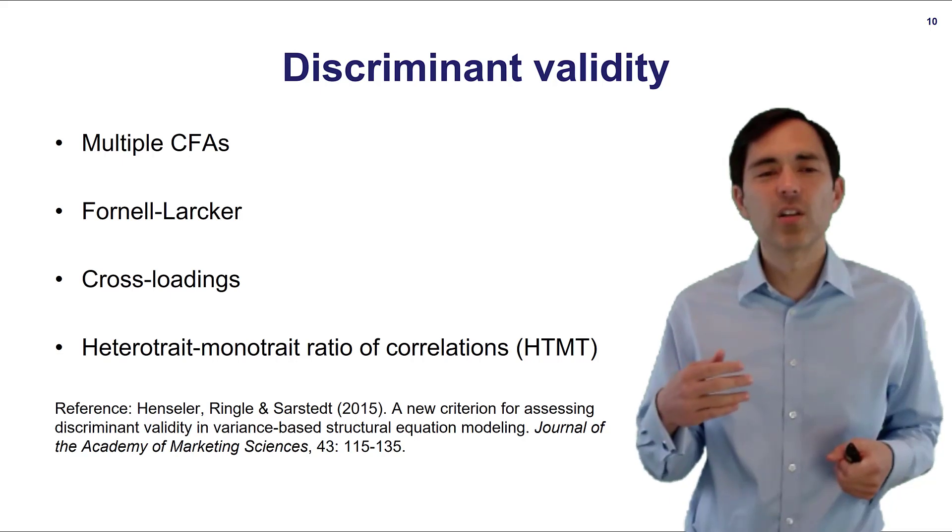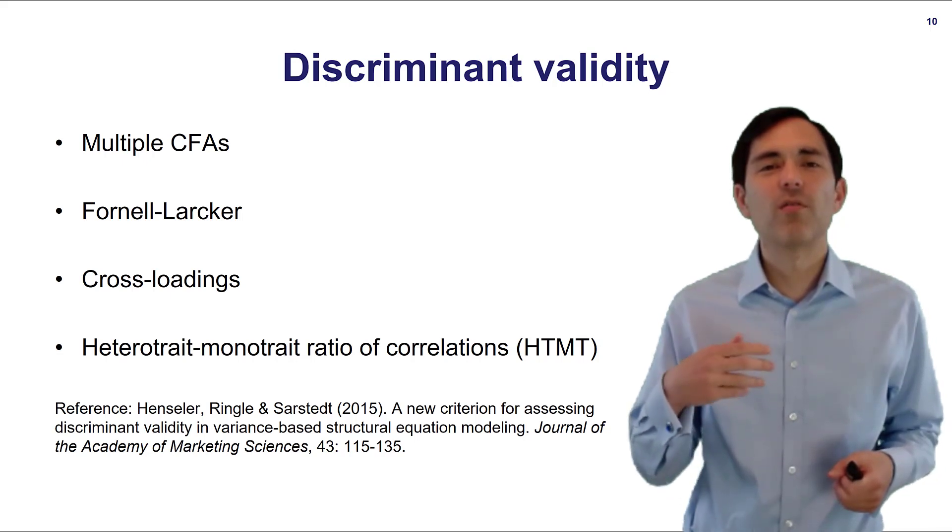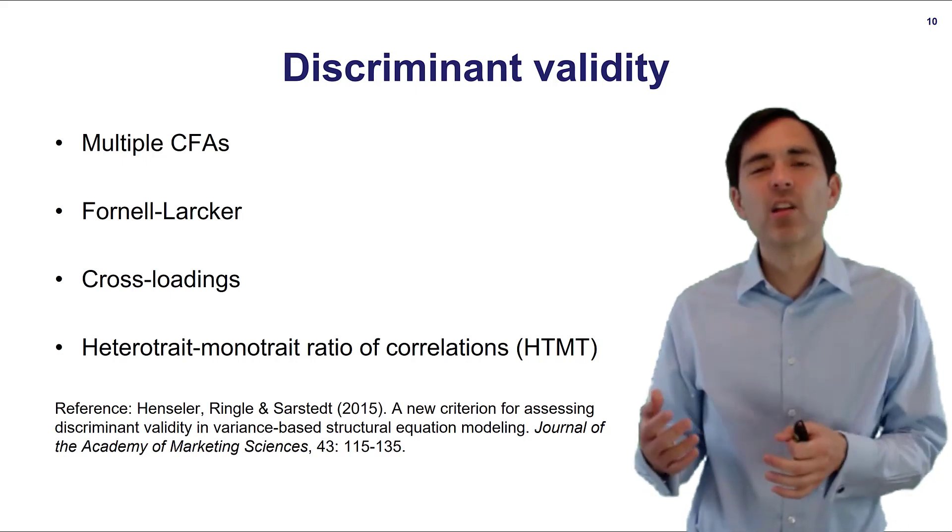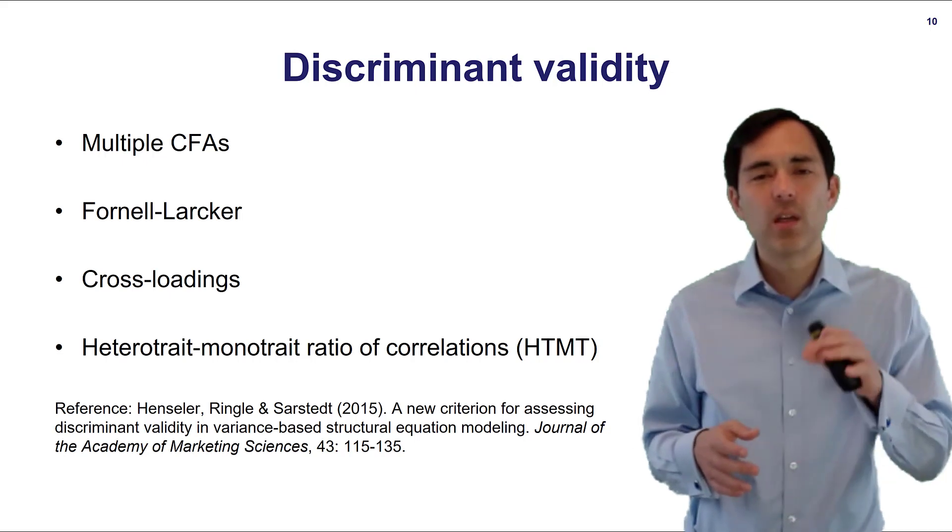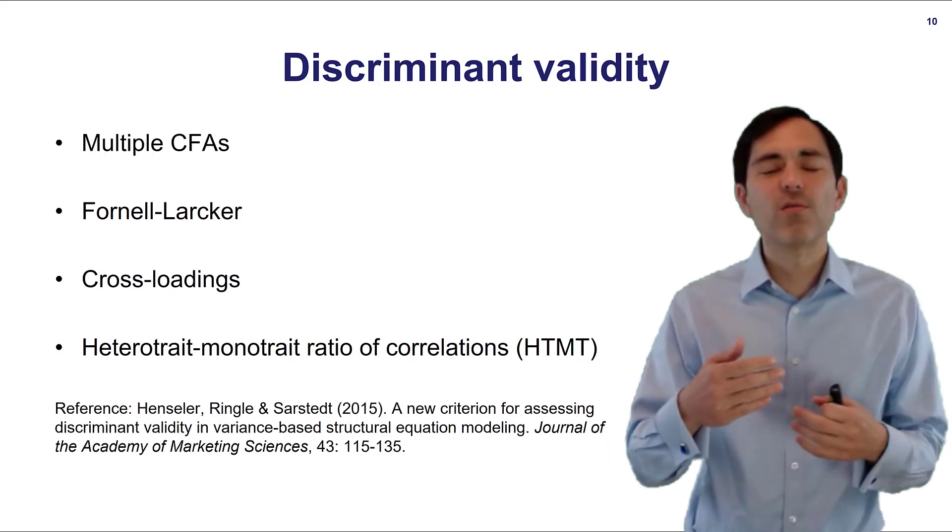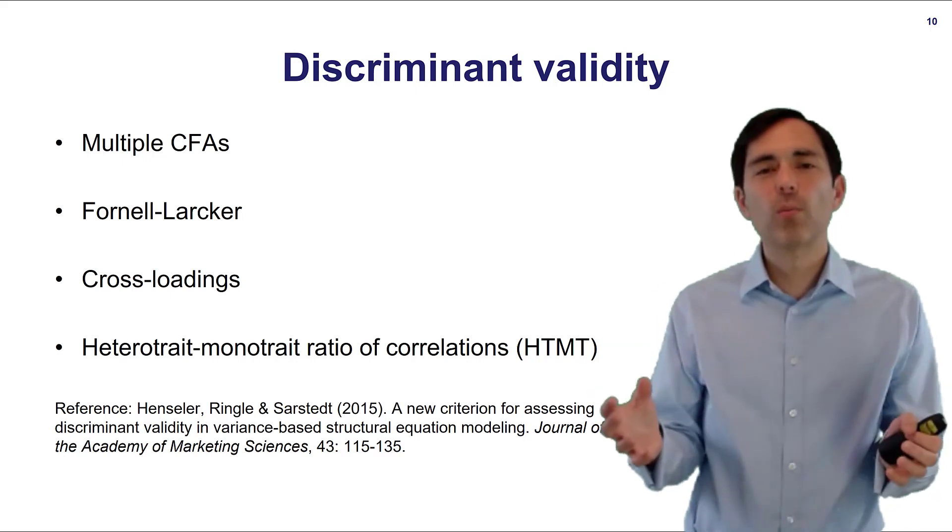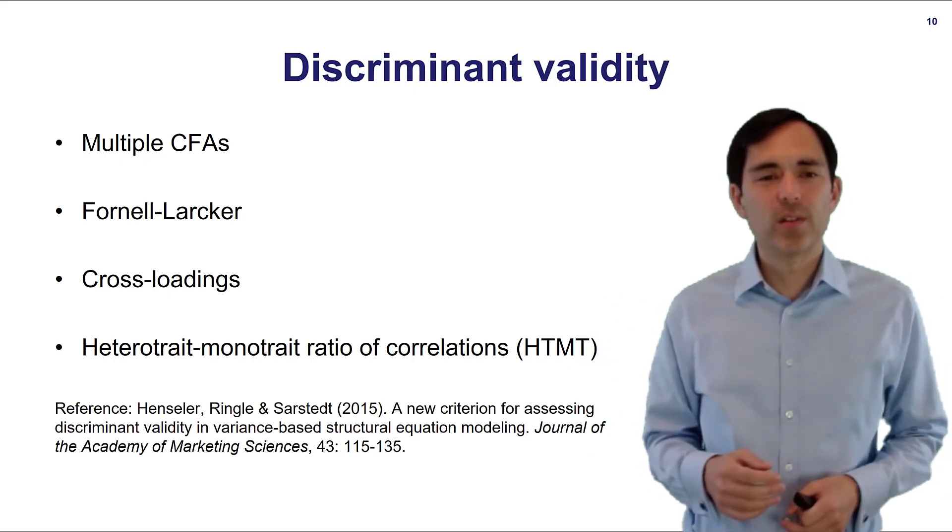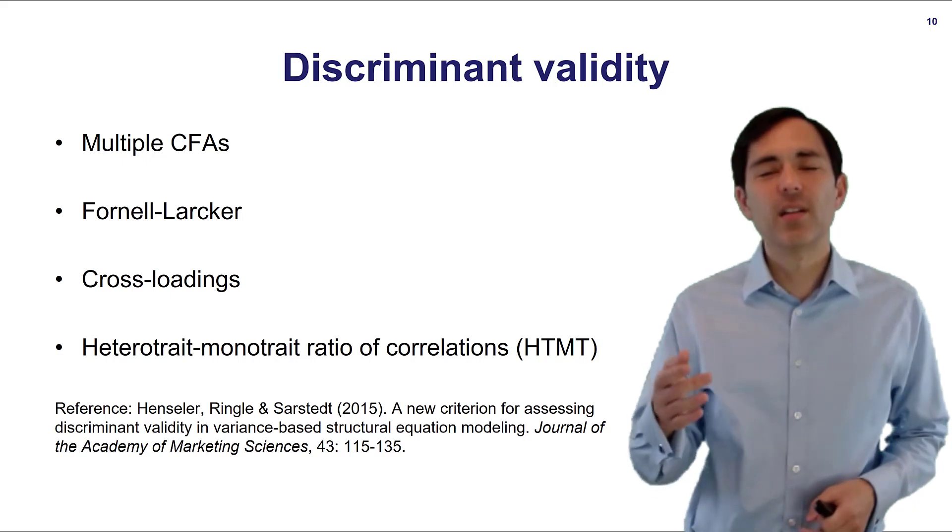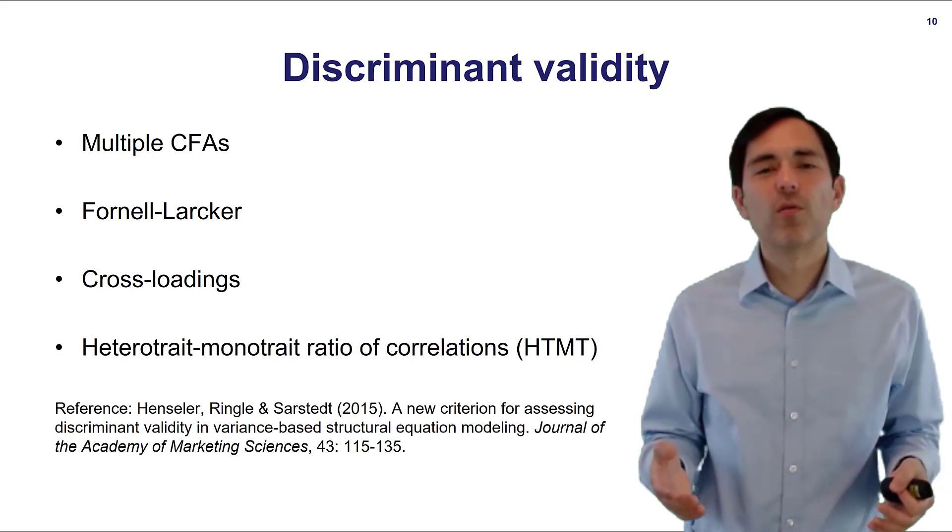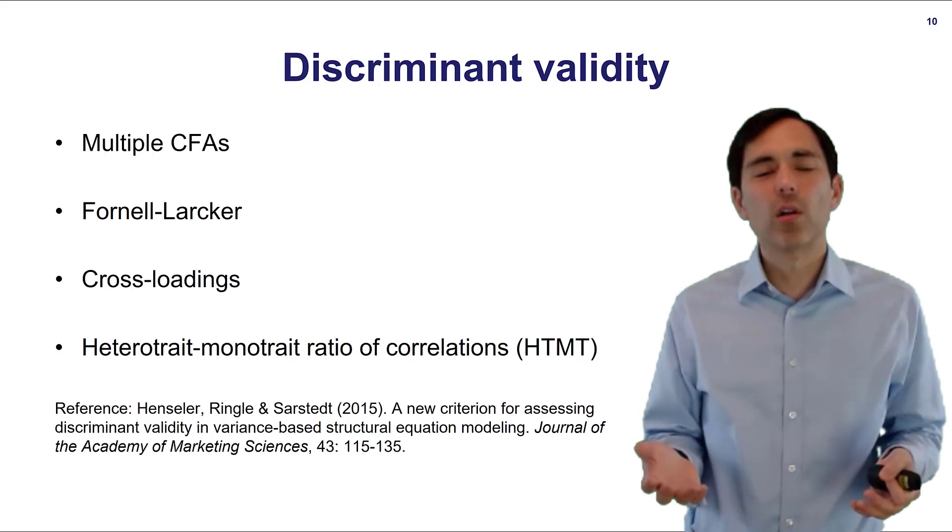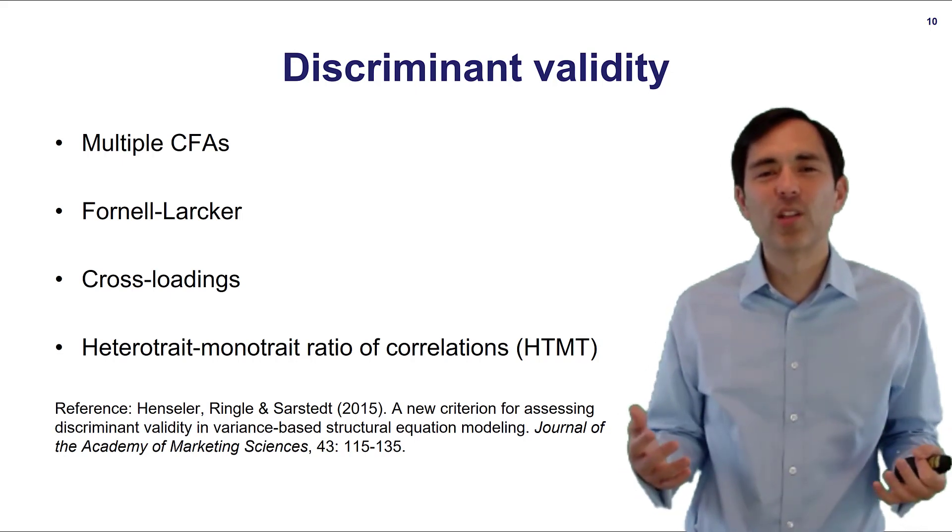You would compare different results of confirmatory factor analysis and you would use different numbers of variables. You may combine certain variables. Maybe the original model has six factors and then you would run the five-factor model where you combine maybe independent dependent variable or you would combine different variables. You would compare the full model with maybe reduced factors where you combine certain variables and maybe also one where you combine all variables. And then you will need to show that the model fit of the models with fewer variables is inferior to the full model or if it's not then you have a problem of discriminant validity.